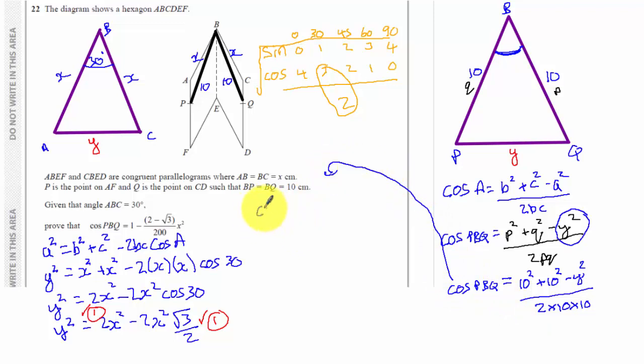I need to put it up here because I'm running out of room a little bit. So I've got cos PBQ equals now 10 squared plus 10 squared is 200 minus Y squared. So it's minus 2X squared minus 2X squared lots of root 3 over 2 and that's all over 200. 2 times 10 times 10. And I now have my third mark.